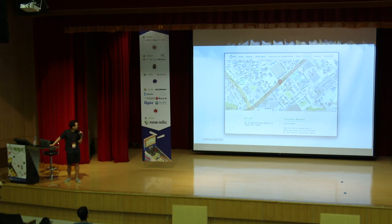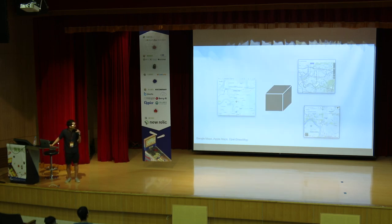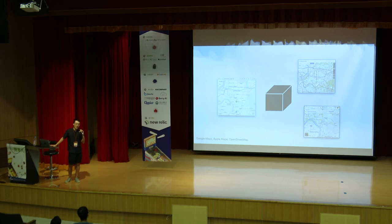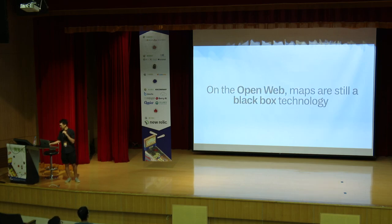Even on this conference website — if you look for the conference location, it gives you an OpenStreetMap-based map. But how is that made? All of these maps on the web are very much a black box. While other parts of the web like web standards and JavaScript are open platforms, there's a lot of mystery in how the map is made and how it appears on screen. Who has control over it? Is it your own map? Is it a company's map? Is it something you pay for, or is it free? Within the open web, maps are still very much a black box.